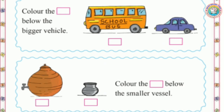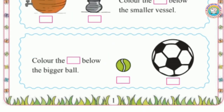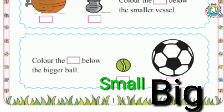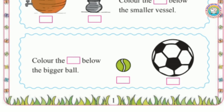Fourth example: there are two balls — one is green color and one is black and white color. The football is bigger than the cricket ball. The football is bigger than the cricket ball.